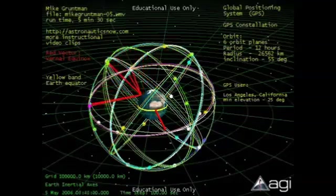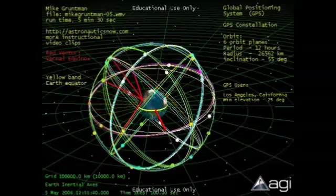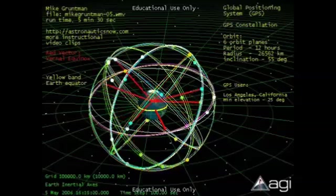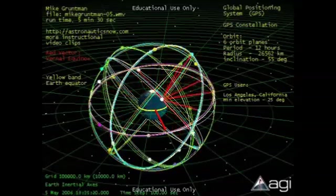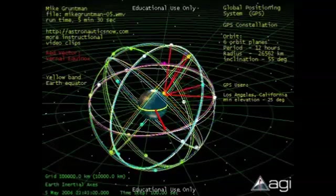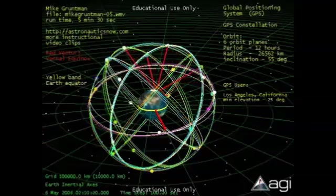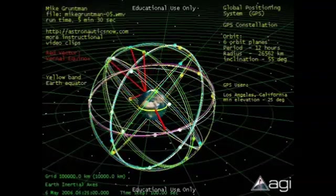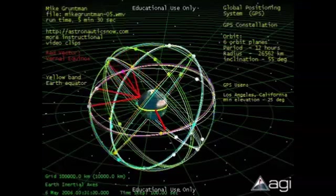The GPS constellation consists of at least 24 satellites. All satellites are in orbit with a period of one half of one sidereal day, 12 hours. Orbits are circular with a radius 26,562 km and inclination 55 degrees. The GPS satellites are deployed in six orbit planes with the points of crossing of the equator distributed in longitude.